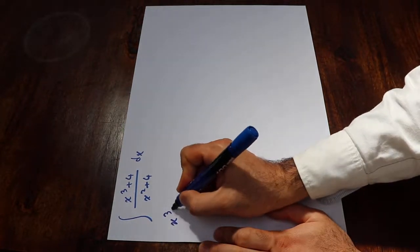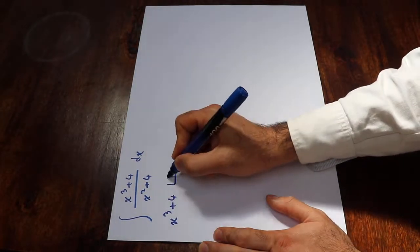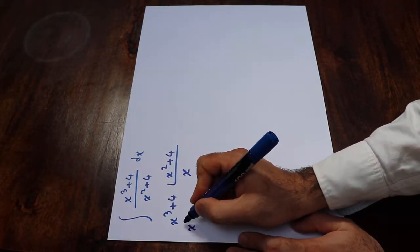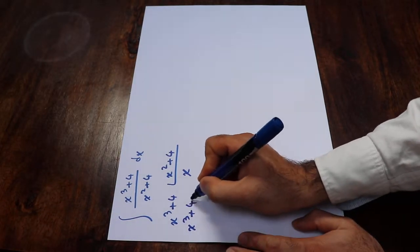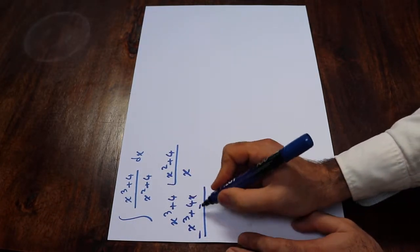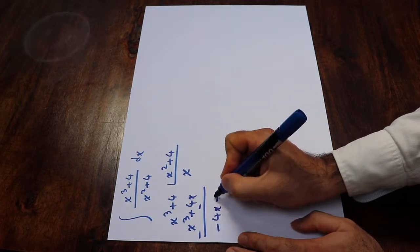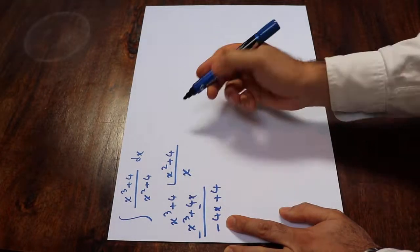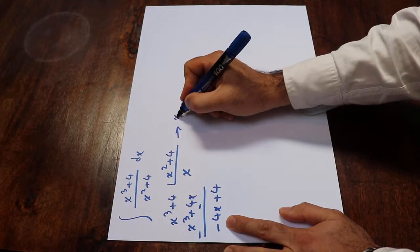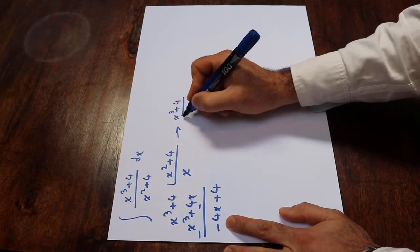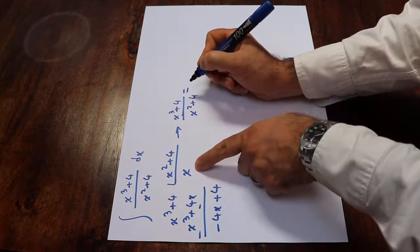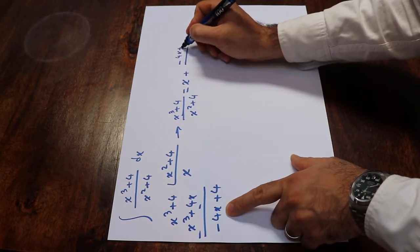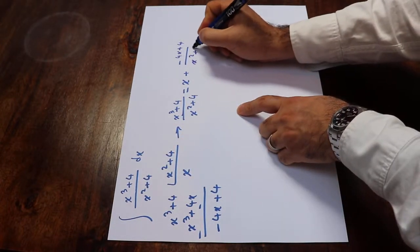To do that, you have x³ plus 4 divided by x² plus 4. x³ divided by x² is just x. Then you multiply, which gives x³ plus 4x. You change the sign and add them up, giving minus 4x plus 4. Since the degree of this remainder term is less than the denominator, you stop here. So x³ plus 4 divided by x² plus 4 equals x plus (−4x plus 4) divided by x² plus 4.